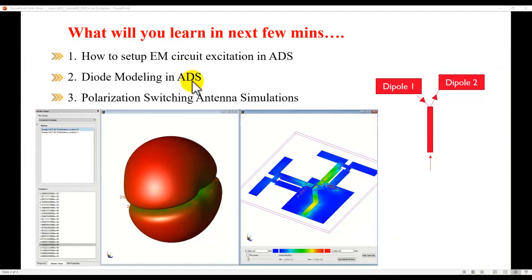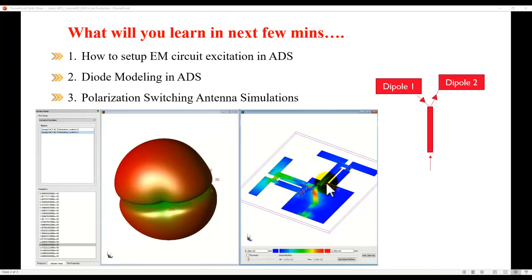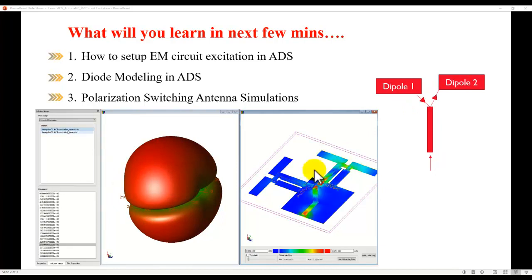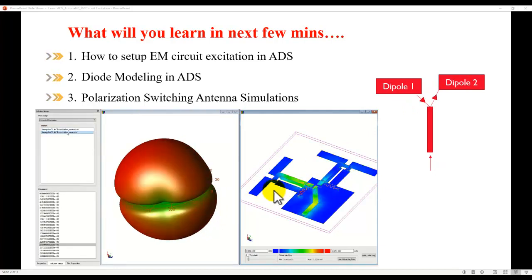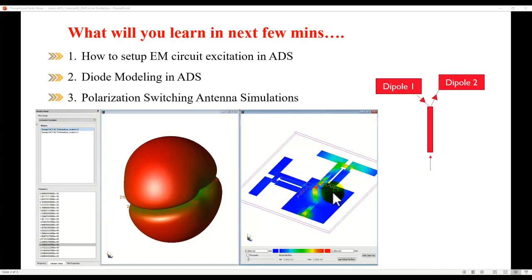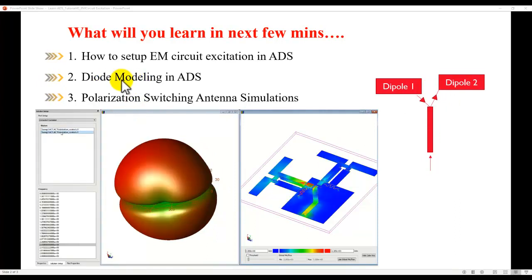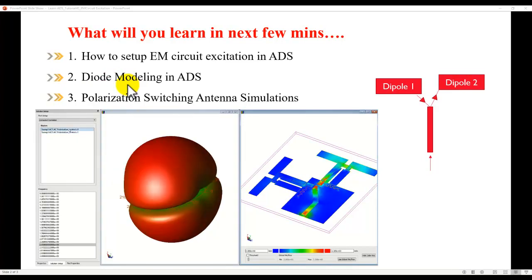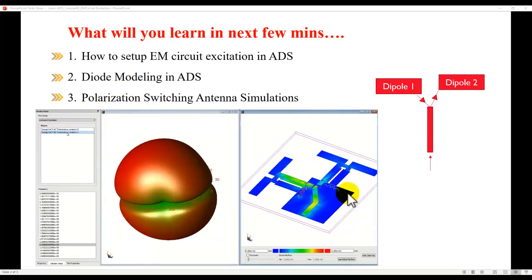In the next few minutes, you'll learn how to set up EM circuit excitation in ADS. In this example we have a dual dipole antenna, and in order to model the switch I have a couple of diodes. Depending upon which diode we pick, one of those two dipoles will become active and we'll see the corresponding radiation field. I will also cover how to do diode modeling in ADS including die model, package model, and then using it in our simulation and design analysis.